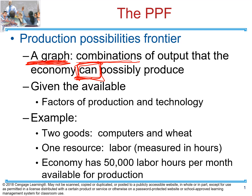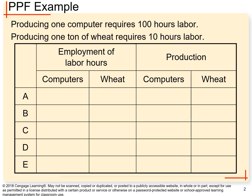We're going to take a very simple example. In our economy, we're going to produce two goods: computers and units of wheat. Our resource is going to be labor, and we're going to have 50,000 labor hours available in order to produce these two goods. We're going to take this 50,000 labor hours and allocate it in different combinations between production of computers and wheat.